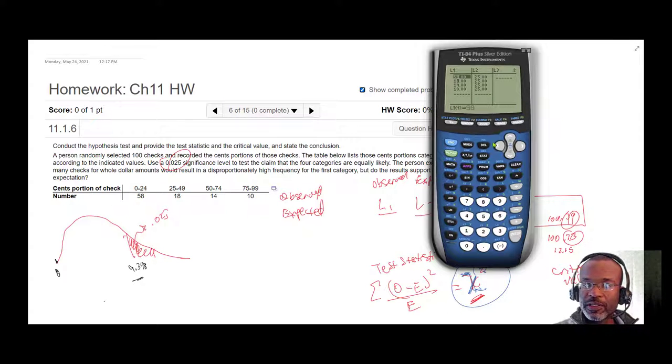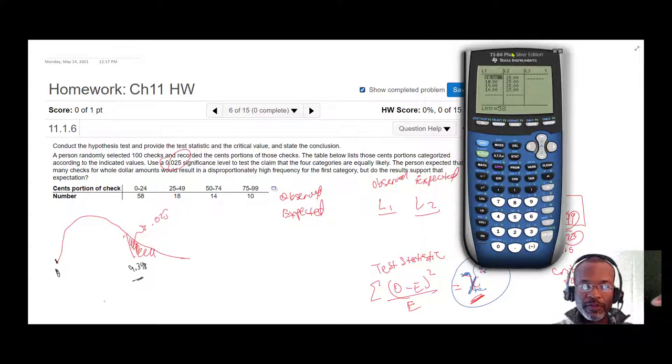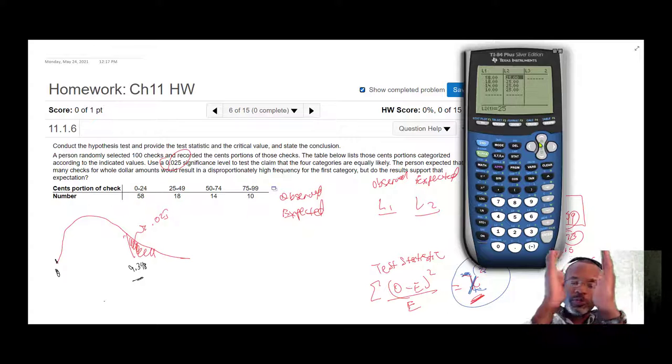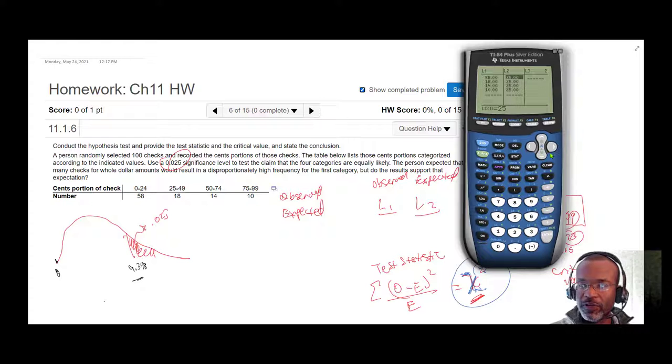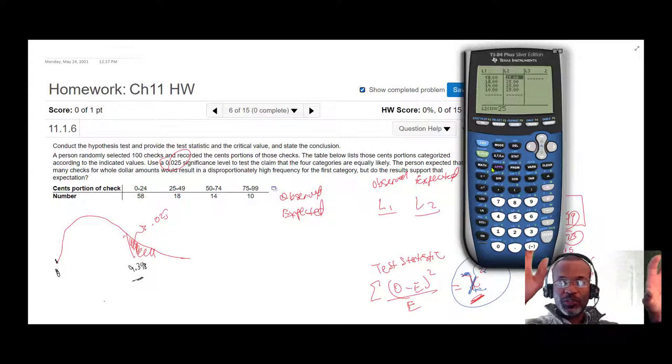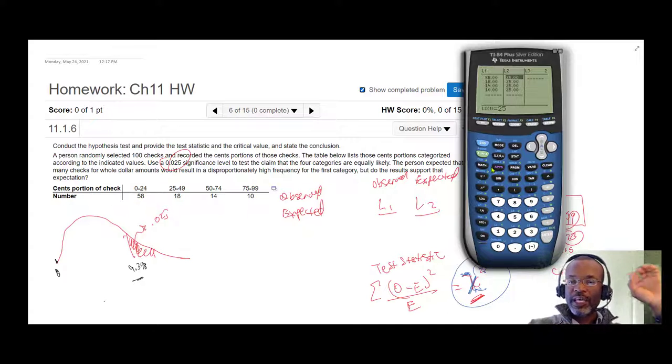So let's go into our list. Our list is what was observed: list one—58, 18, 14, 10. And expected will be that there's no real difference in the proportions between the categories, so 25, 25, 25, 25. Instead of doing 58 minus 25 squared divided by 25 manually, we're going to use technology to help us.